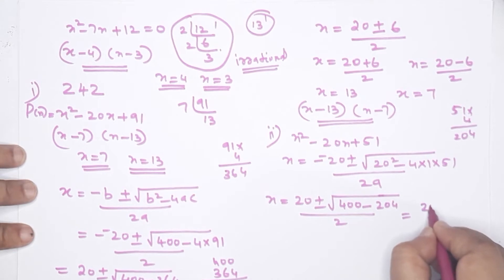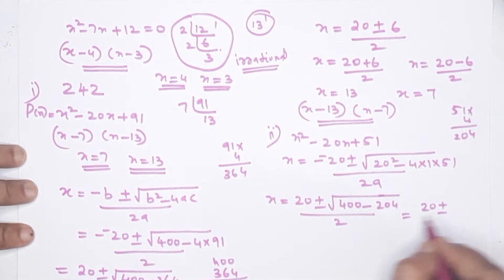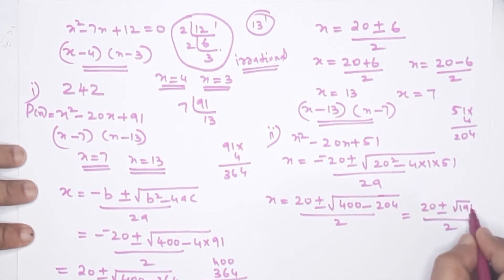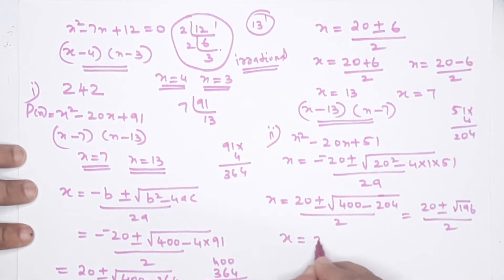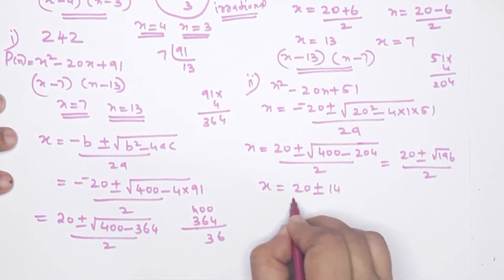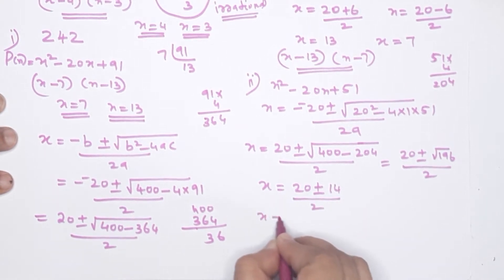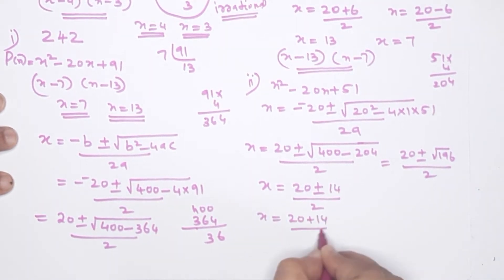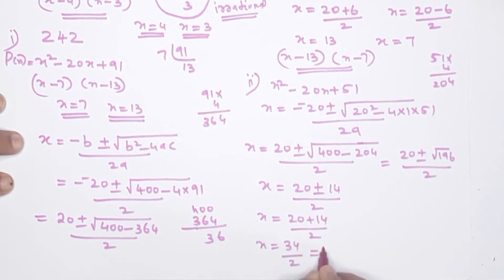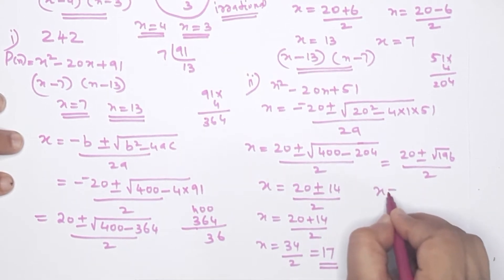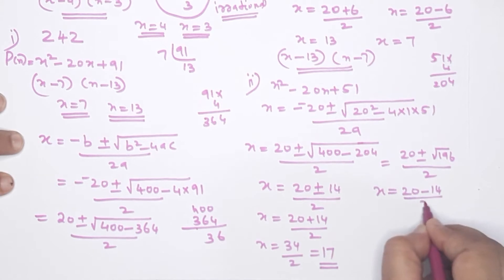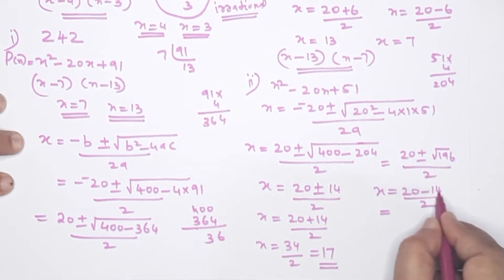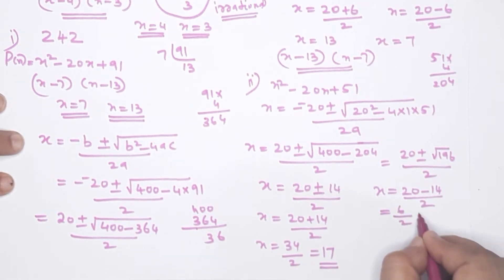So x = (20 ± 14) / 2. Then x = (20+14)/2 = 34/2 = 17, and x = (20-14)/2 = 6/2 = 3. So x=17 and x=3 are the answers.